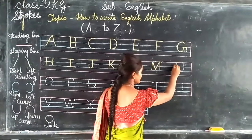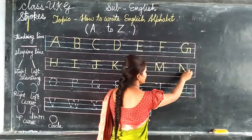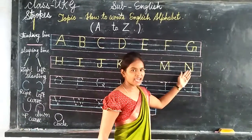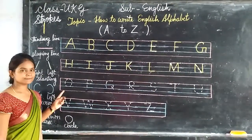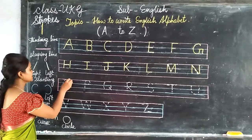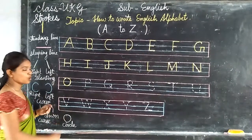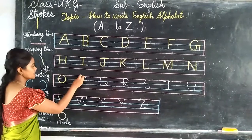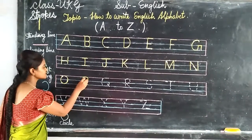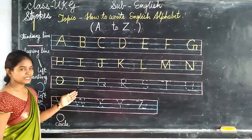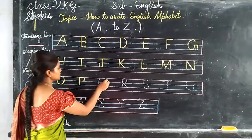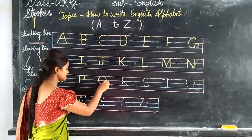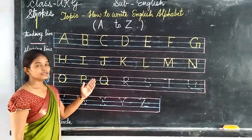Standing line, left sliding line, and standing line. N. Big circle. O. Standard line, left small curve. P. O, left slanting line. Q.